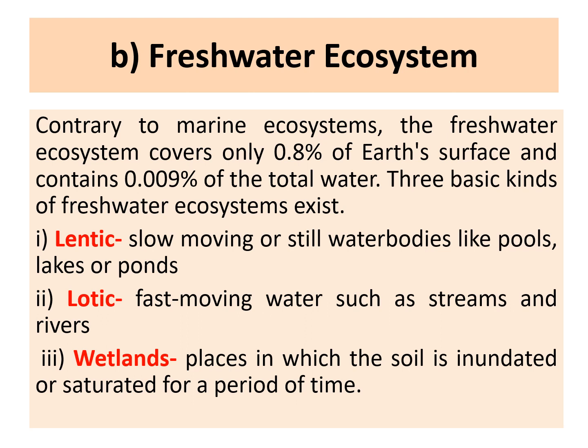The next type of aquatic ecosystem is the freshwater ecosystem. Contrary to the marine ecosystem, the freshwater ecosystem covers only 0.8% of the Earth's surface area and contains only 0.009% of the Earth's water. This can be of three types: the first is lentic, or slow-moving water bodies like pools, lakes, or ponds; the second is lotic water bodies, which are fast-moving like rivers and streams; and the third is wetlands — areas which are usually dry but are wet for a considerable amount of time.